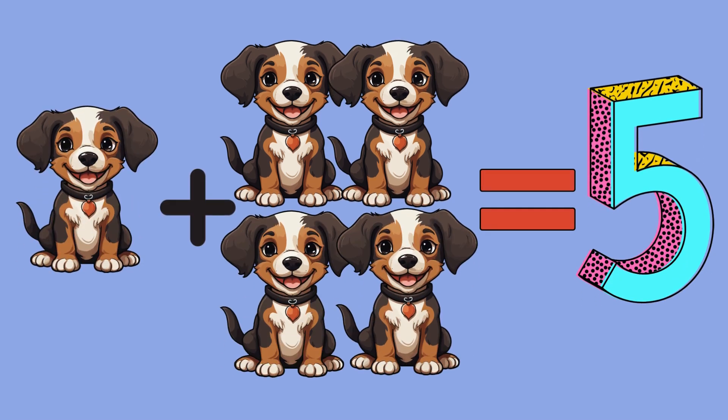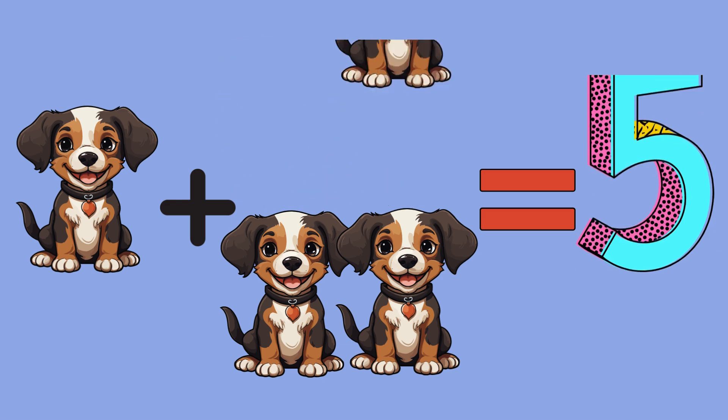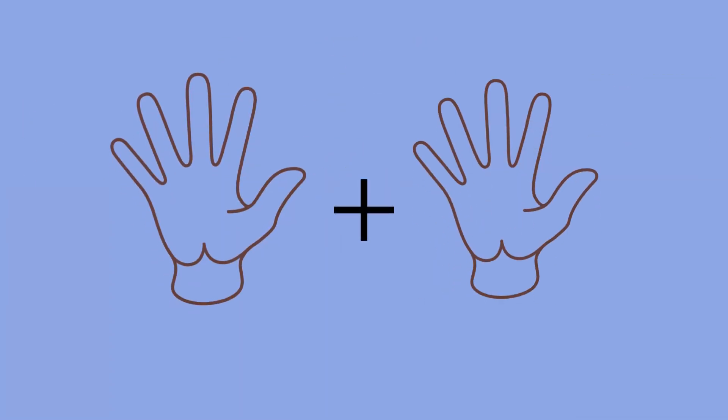Problem three. I have one cute puppy and four more puppies come to play. How many puppies are there all together? Let's count those adorable puppies. One, two, three, four, five. Wonderful, one plus four equals five.